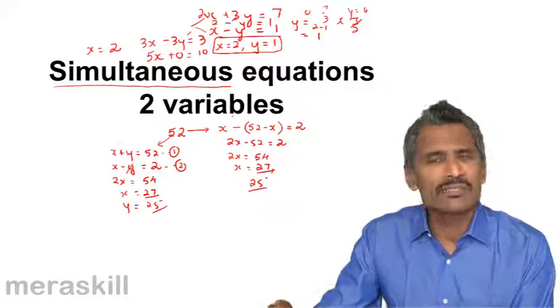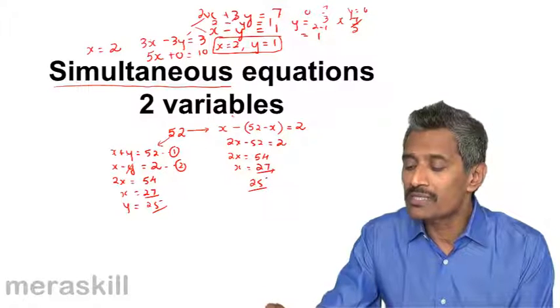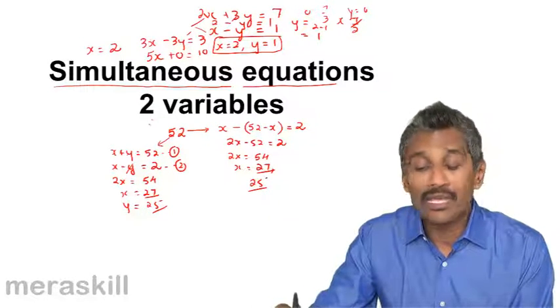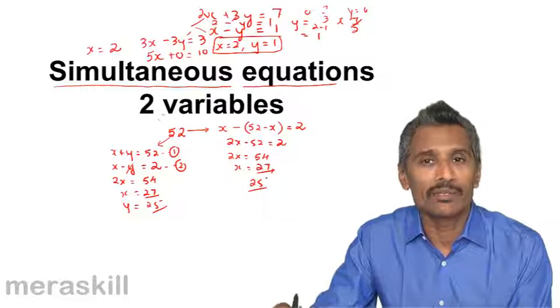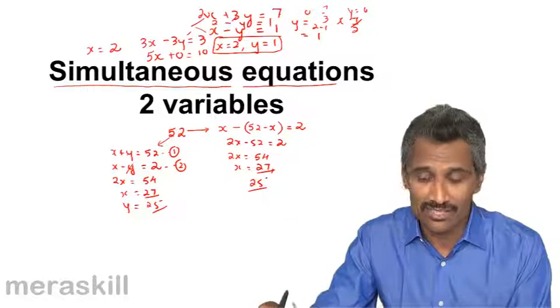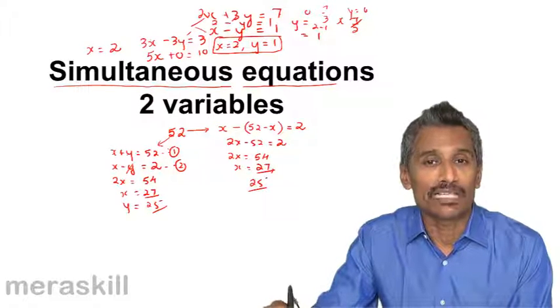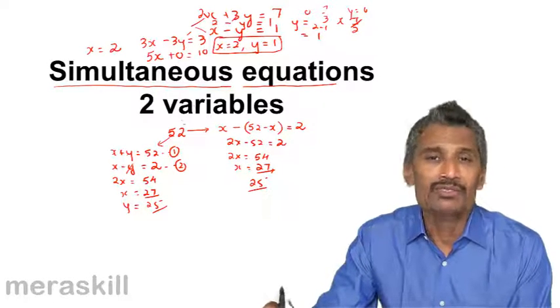So this in a nutshell is a simple idea of what simultaneous equations in two variables mean. Actually an equation in two variables can never be solved in isolation. We solve them in correlation with another equation and arrive at a common solution.